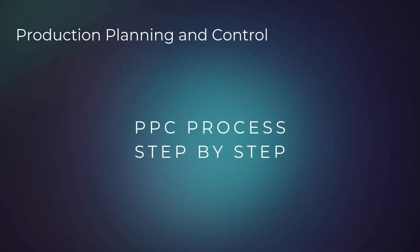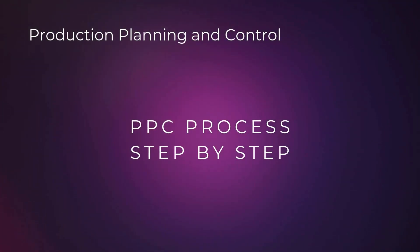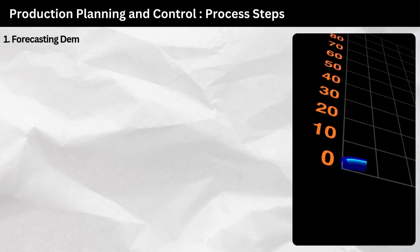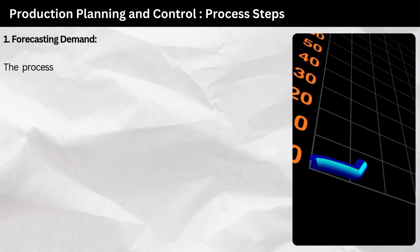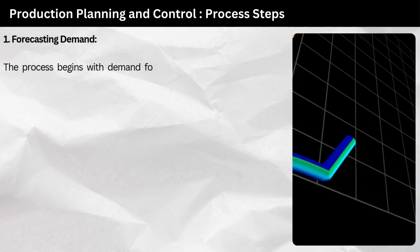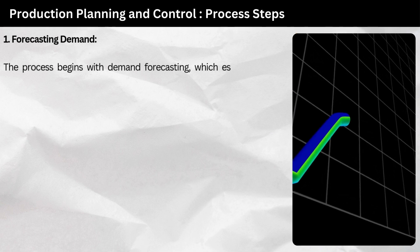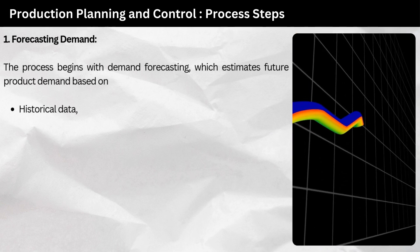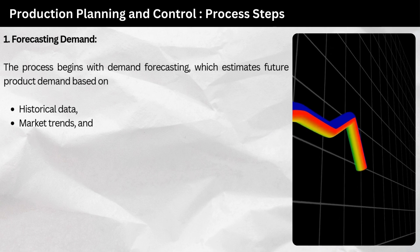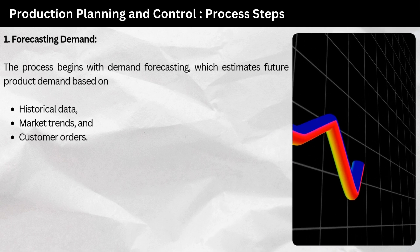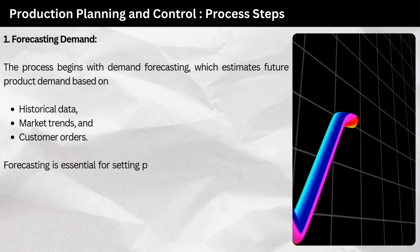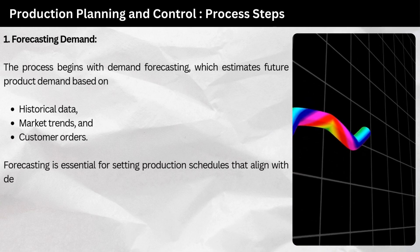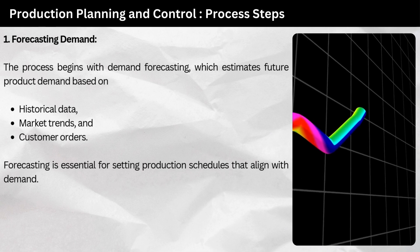Here's how the PPC process works, step by step. Step 1: forecasting demand. The process begins with demand forecasting, which estimates future product demand based on historical data, market trends, and customer orders. Forecasting is essential for setting production schedules that align with demand.